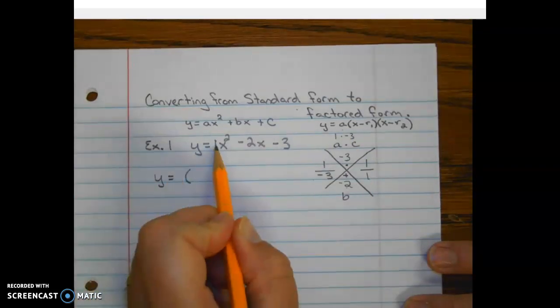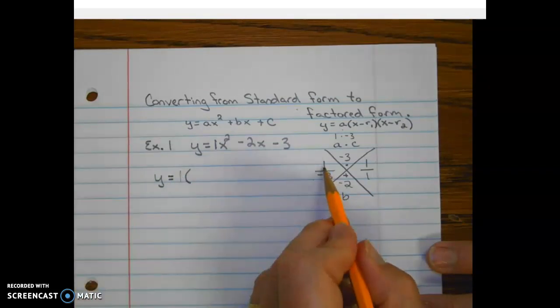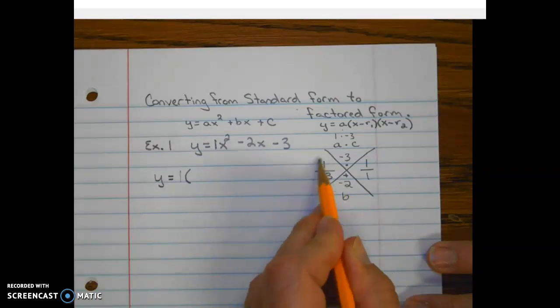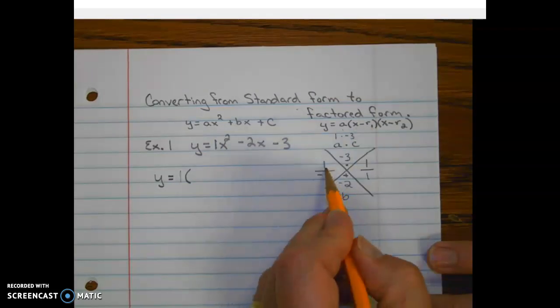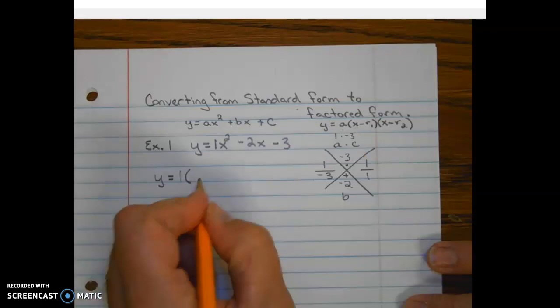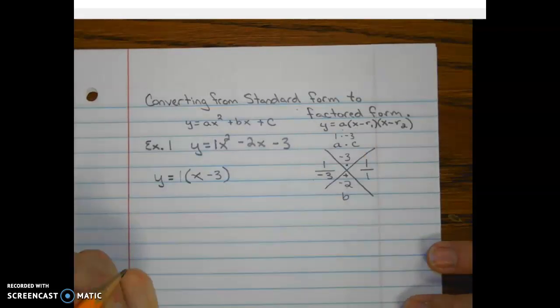So since our A value is 1, it stays 1. The top number of our ratio is going to be the coefficient on the x term for our first factor here, x minus root 1. So this is going to be 1x minus 3.